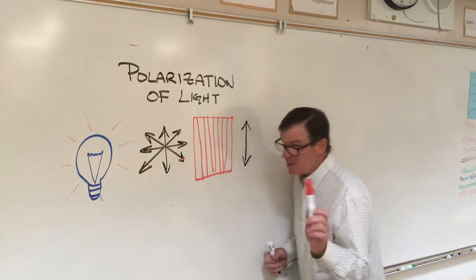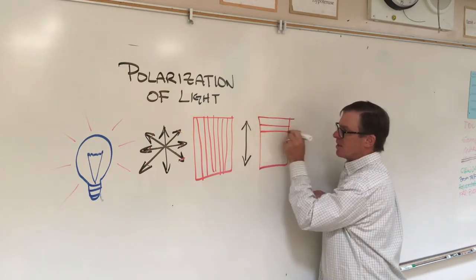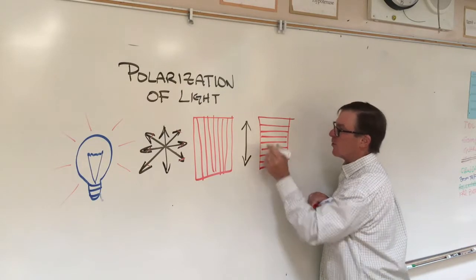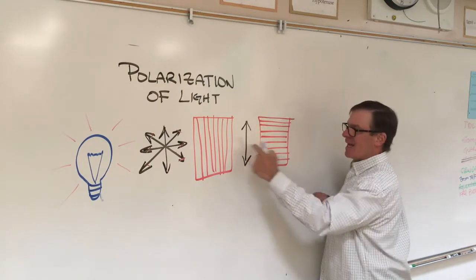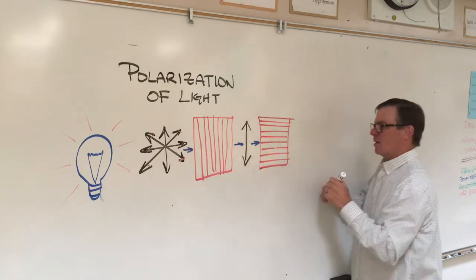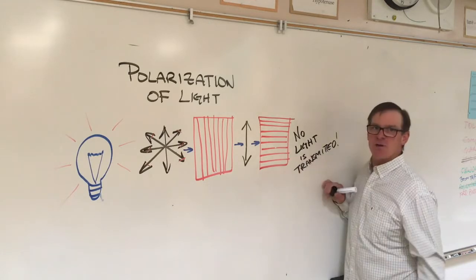Well, if we have a second polarizing filter and we orient it so that it's polarizing axis is horizontally oriented, then this light cannot get through this. And so what we get, we get nothing. No light is transmitted.